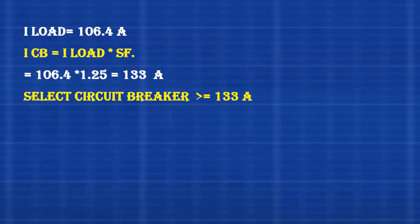Now, we calculate the circuit breaker current. By applying the formula, we get circuit breaker current equals load current multiplied by safety factor, assuming a safety factor of 1.25. Then, circuit breaker current equals 106.4 multiplied by 1.25, which equals 133 amperes. We choose the nearest standard size, which is 150 amperes.